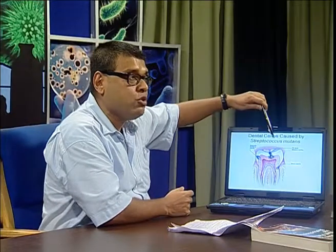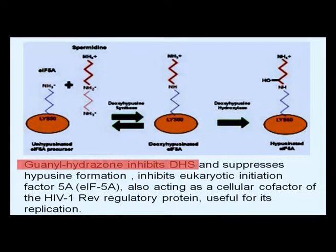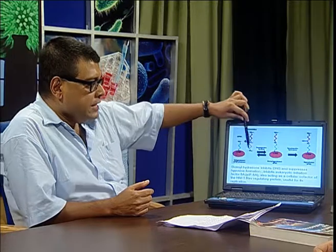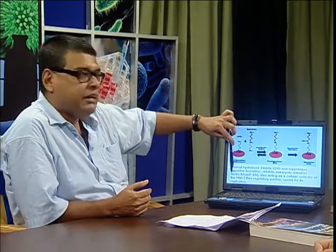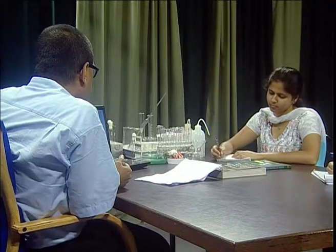In 2003, Hoiber et al. discovered a very important compound called guanyl hydrosome, which inhibits an enzyme called deoxyhypusine synthase (DHS). This DHS inhibitor suppresses hypusine production. Hypusine is actually an inhibitor for the eukaryotic initiation factor EIF5A, but it is also acting as a cellular cofactor for HIV-1 virus. So HIV-1 can be controlled by guanyl hydrosome, which ultimately inhibits DHS and thereby keeps HIV replication under control.